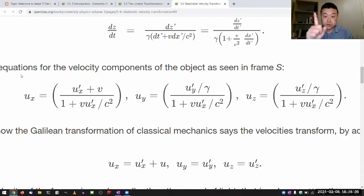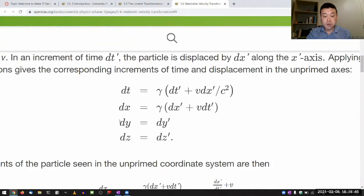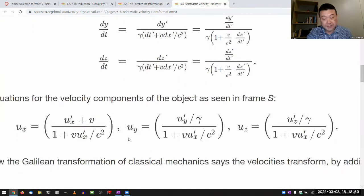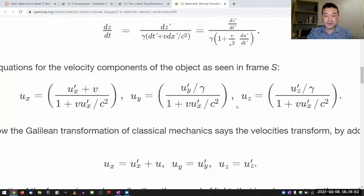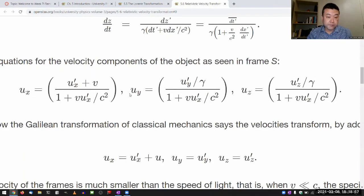And compared to how the position length transforms, the x component transforms, and then in the case of position, y and z components are left alone. But in case of velocity, y and z components are not left alone. They also have to be transformed. So this is one of those where it involves ugly formulas.